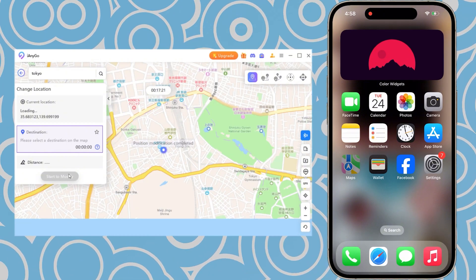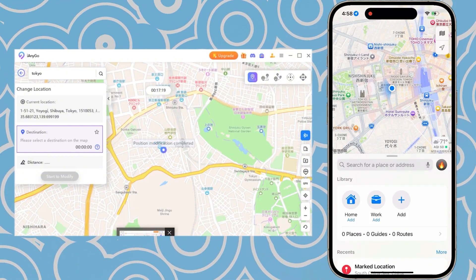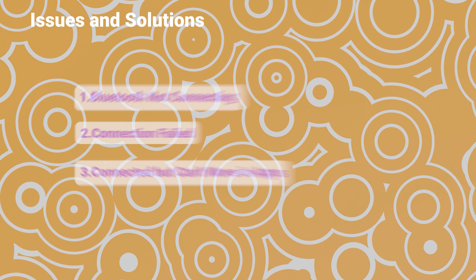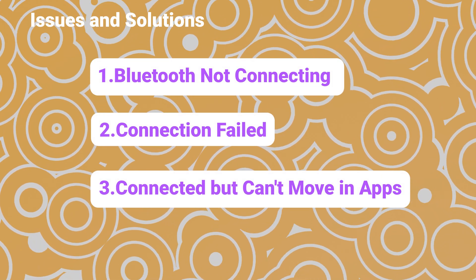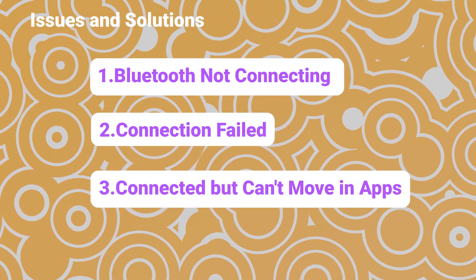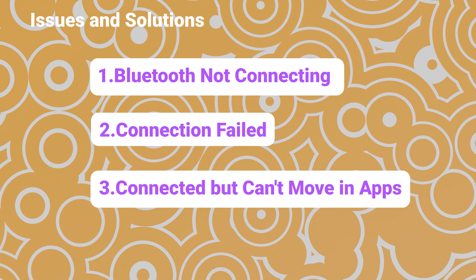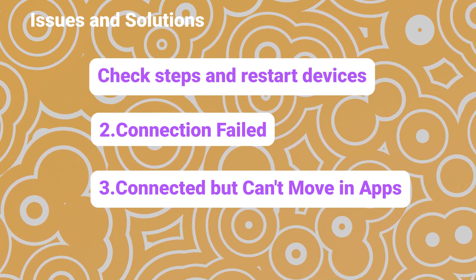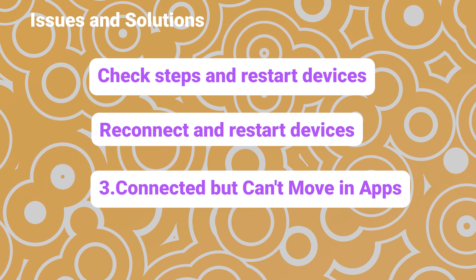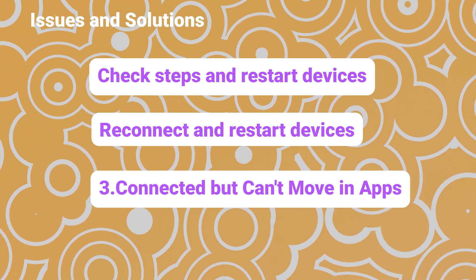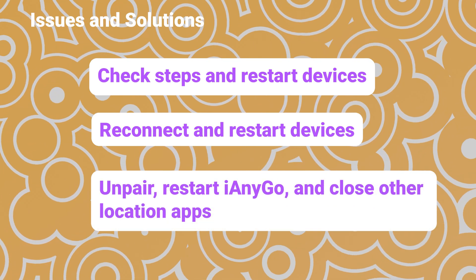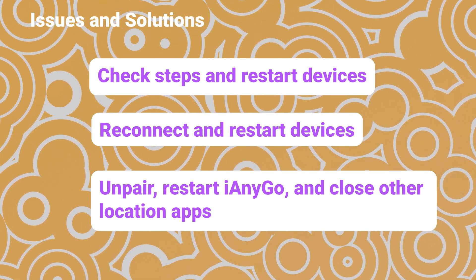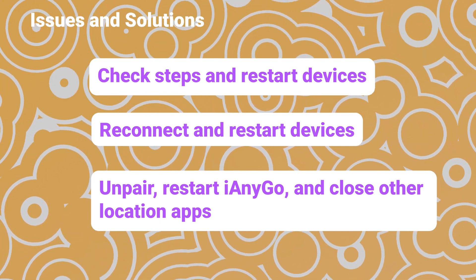As you can see, my location has successfully changed to Tokyo. Now, if you encounter Bluetooth issues while using iAnyGo, don't worry. To solve them, make sure you've completed all the steps correctly. If that doesn't work, try reconnecting a few times and restarting both your phone and computer. You can also delete the paired devices on both your phone and PC, then restart iAnyGo and try again.